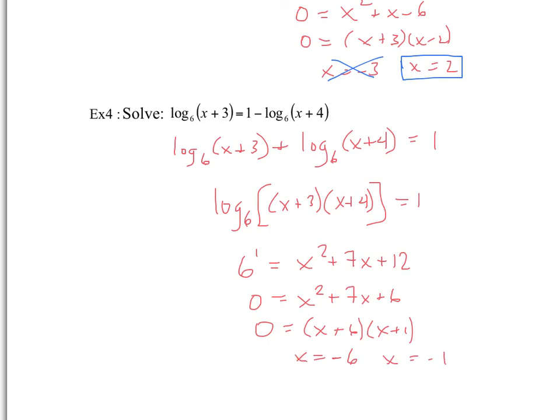Now we've got to check. Plugging in negative 6 right away makes the argument negative, so that's rejected. Plugging in negative 1: negative 1 plus 3 is 2 — we're good there. And negative 1 plus 4 gives 3 — we're also good here. So x equals negative 1 is our solution, and x equals negative 6 is rejected. That's it — I hope you have luck trying these questions on your own. See you in class.